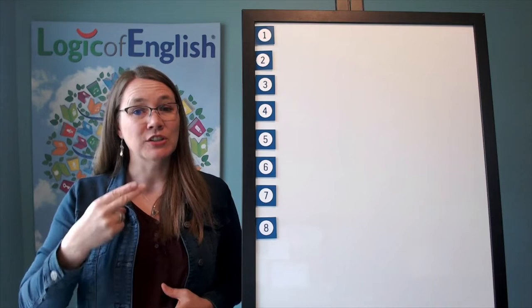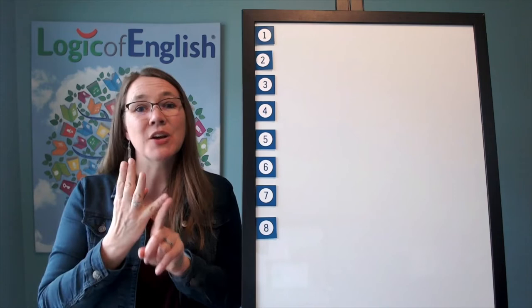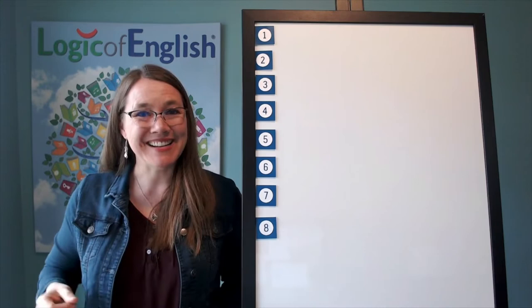The second syllable is er, the er of her. The third syllable is e — use a y, i, e. The fourth syllable is thing, th, i, n. Go ahead and write ev, er, e, thing.